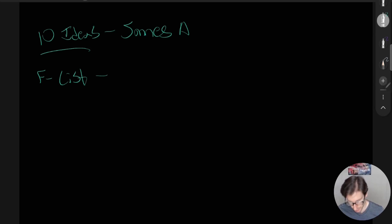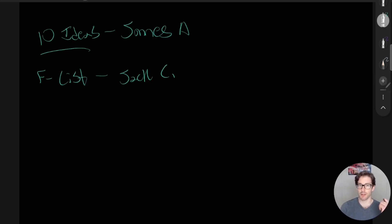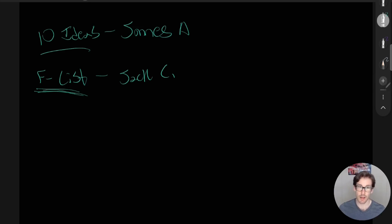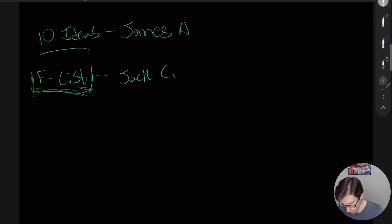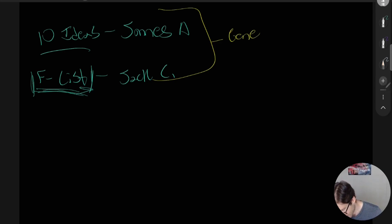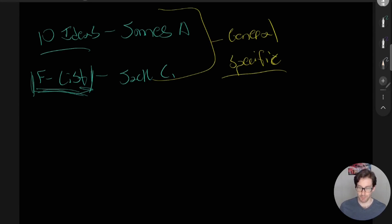The other approach is a frustration list — basically an irritation list. This came from Jack Cornfield and is a common piece of advice explained in different ways. You walk around your life, experience it day to day, and write down the things that frustrate you. Then you think: can I solve this with a service or product? The issue with both of these approaches is they're too general. I need something more prescriptive and specific, which is exactly what Sahil provides.